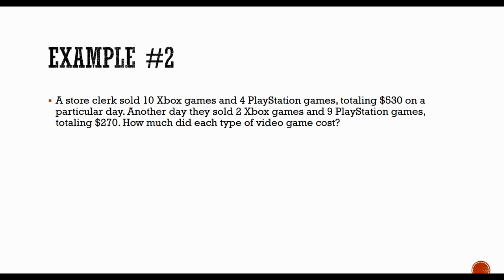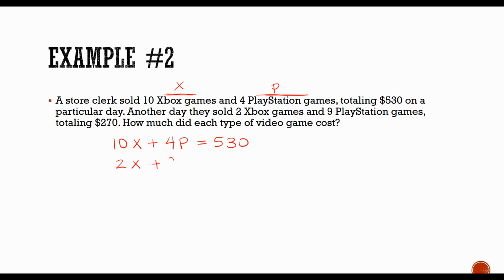We need to pick variables for Xbox and PlayStation games. Maybe we use X and P to keep track of which is which. The combinations from the two days set up equations equaling the money made each day. For the first day: 10X plus 4P equals $530. The second equation follows the same format — on the second day, 2X plus 9P equals $270.